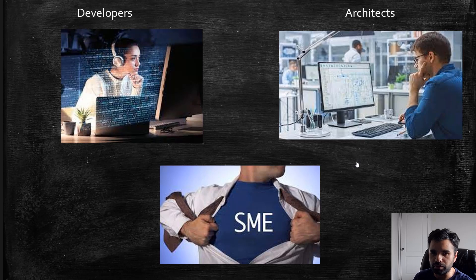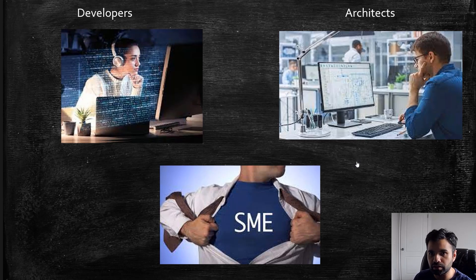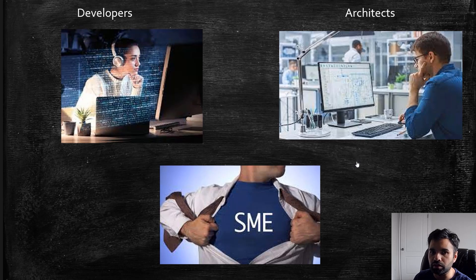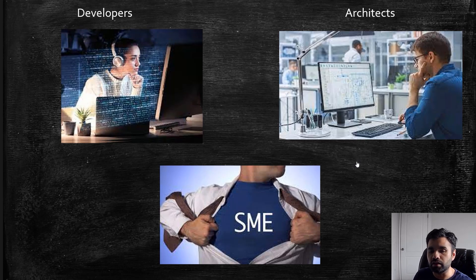The first question is: whom do you need to get started with the code review? First, you need buy-in from developers, because they know the code better than anyone else. You need architects, because they know the architecture of the application better than anyone else. And you need subject matter experts — SMEs — especially in large organizations where authentication and authorization are centralized modules. You need to get in touch with those SMEs to understand the critical components.